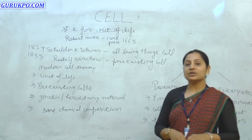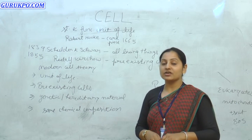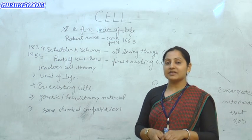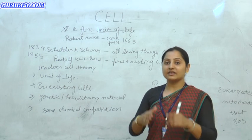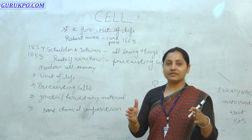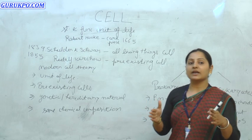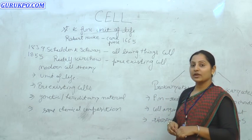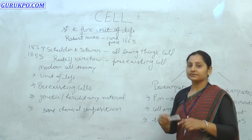According to the structure of cells, cells are categorized into two categories. The first one is the prokaryotic cell, and the other one is the eukaryotic cell.